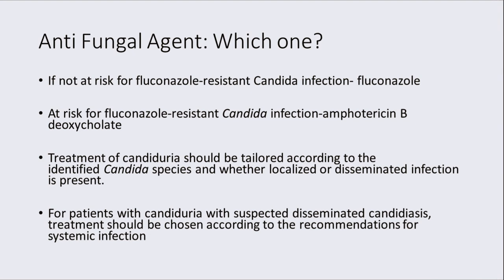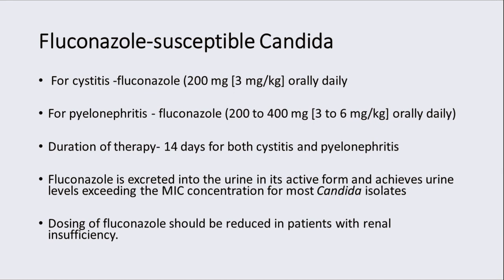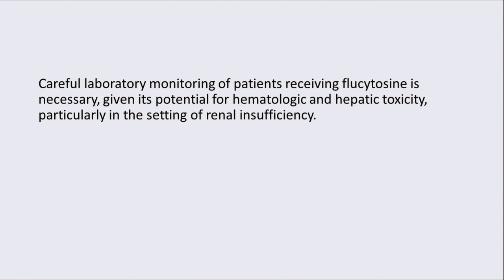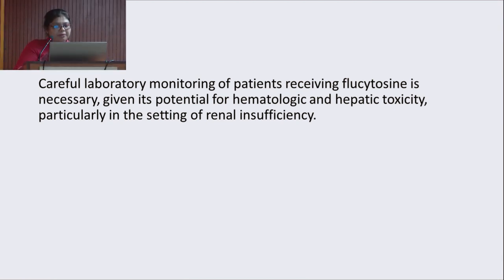If there is no risk of fluconazole-resistant Candida infection, fluconazole should always be the first drug of choice. Patients at risk for fluconazole-resistant Candida infection should be treated with amphotericin B deoxycholate, but liposomal formulations should be avoided. Treatment of candiduria should be tailored according to the identified Candida species and whether the infection is localized or disseminated. The dosage schedule for fluconazole for cystitis and pyelonephritis is 14 days duration. Renal function should be kept in mind and doses modified accordingly. Careful laboratory monitoring for flucytosine should be maintained due to its potential toxicity.